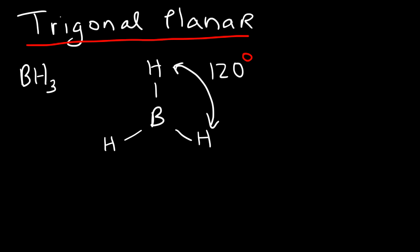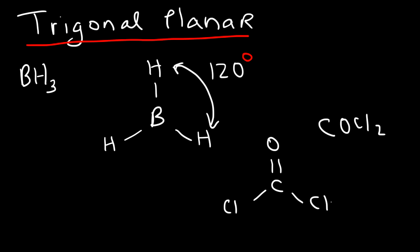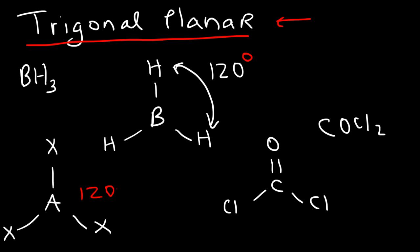Another example of a trigonal planar structure is COCl2, where carbon has a double bond to an oxygen and is attached to two chlorine atoms. Any time you have an atom at the center surrounded by three things, and the central atom doesn't have any lone pairs, you have a trigonal planar structure with a bond angle of approximately 120 degrees.